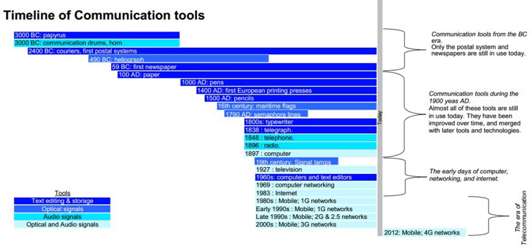2006 – Twitter is launched. 2007 – iPhone is launched. 2009 – WhatsApp is launched. 2010 – Instagram is launched. 2011 – Snapchat is launched. 2015 – Discord is launched.